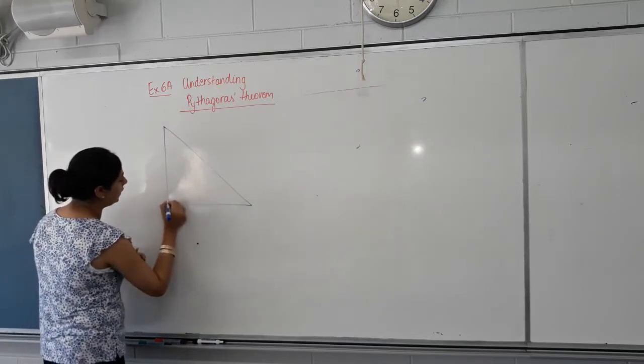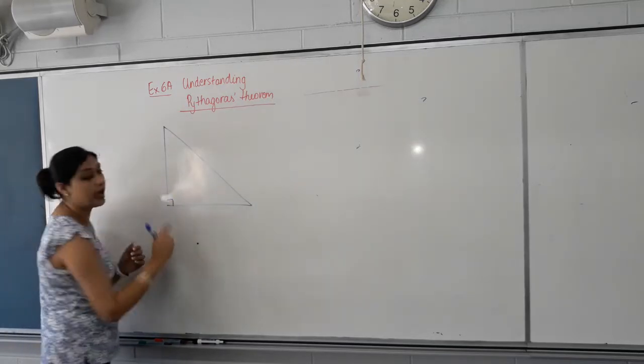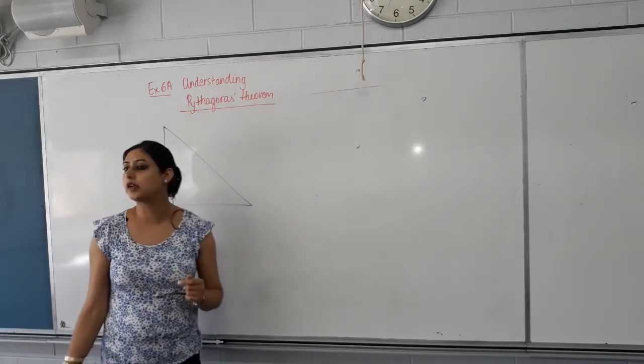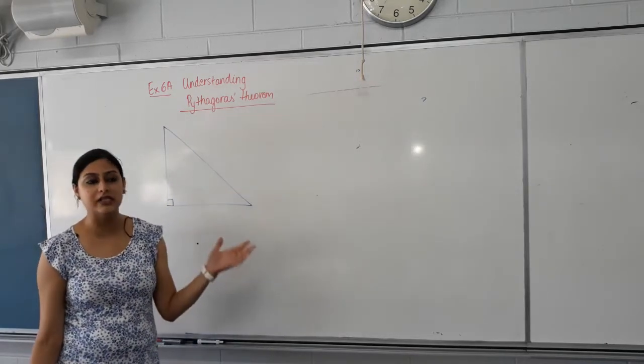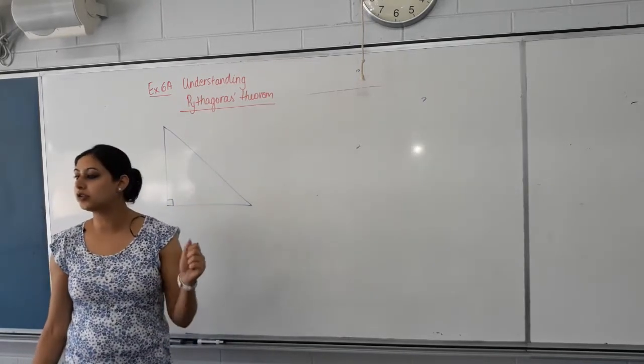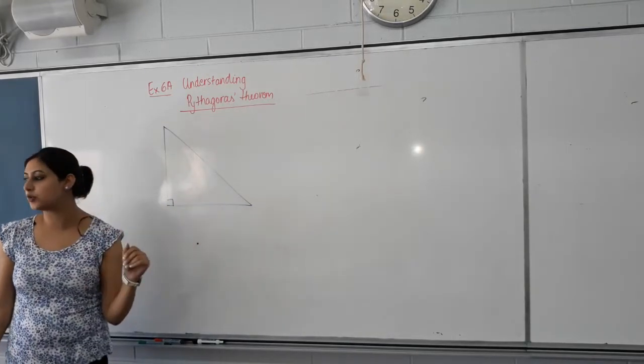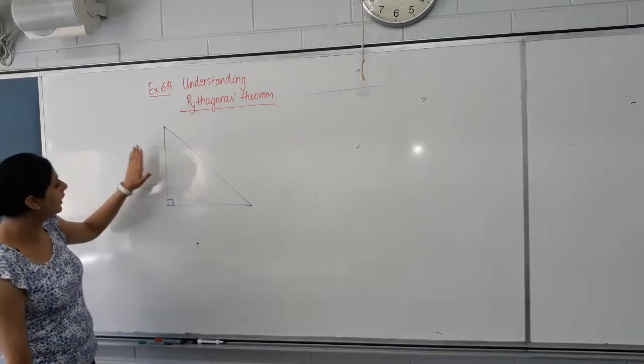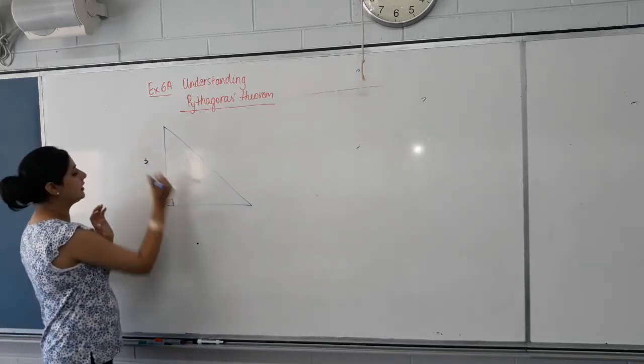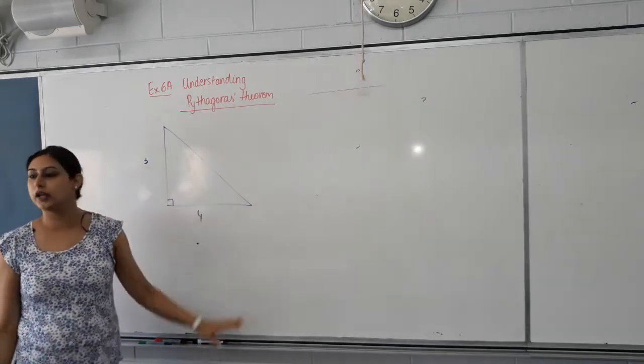So the first thing we need to check in a question is, do we have a right angle triangle? If we do, we can find a missing length in a right angle triangle. Now, to find one missing length, we must have two other lengths given to us. So if I have the length of this side and length of this side, I can find the unknown side.